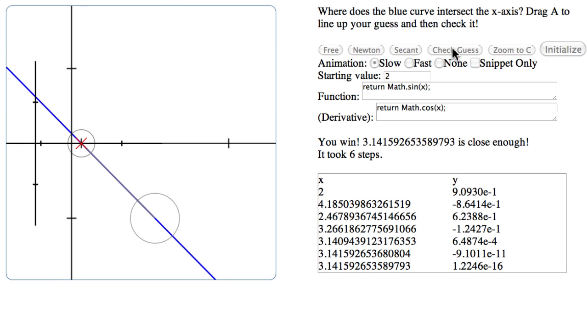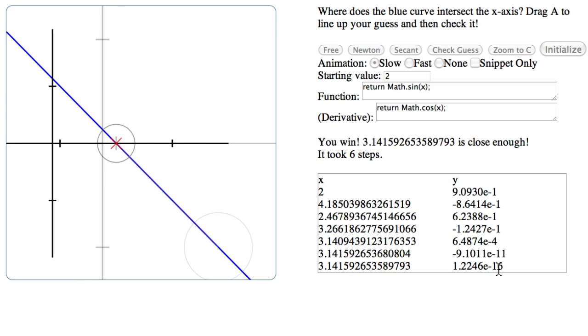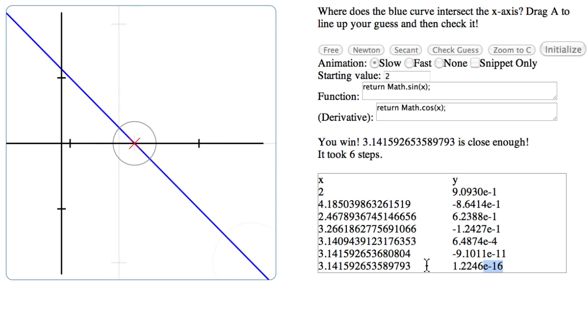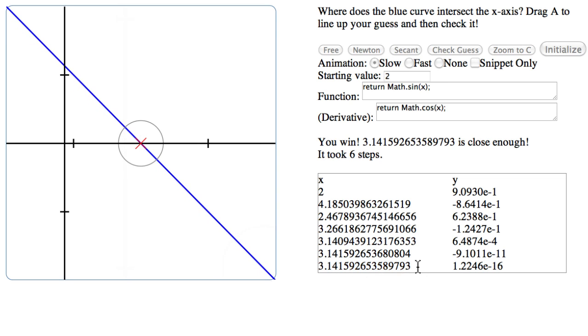It's not doubling here because e to the minus sixteenth is as well as we can do. The limiting factor here is that the x cannot be known more precisely than this. This is actually pi. And we did that in six steps, no fuss no muss. So that's Newton.